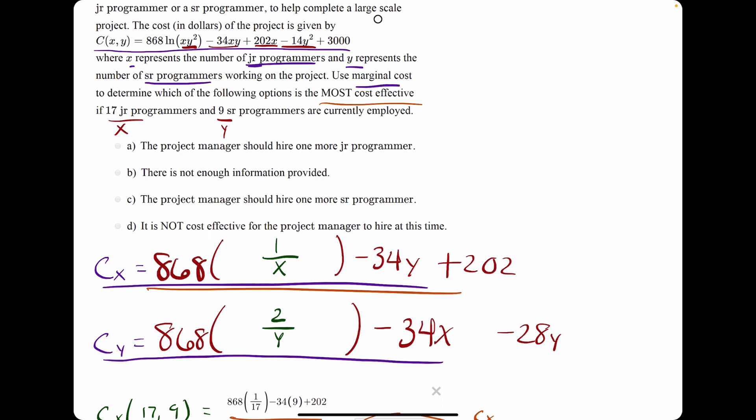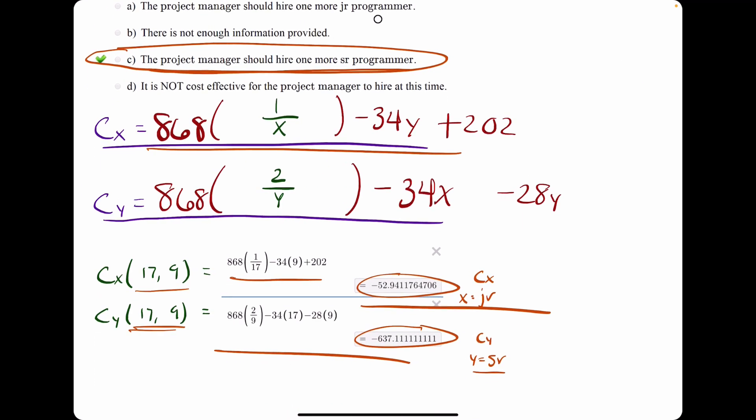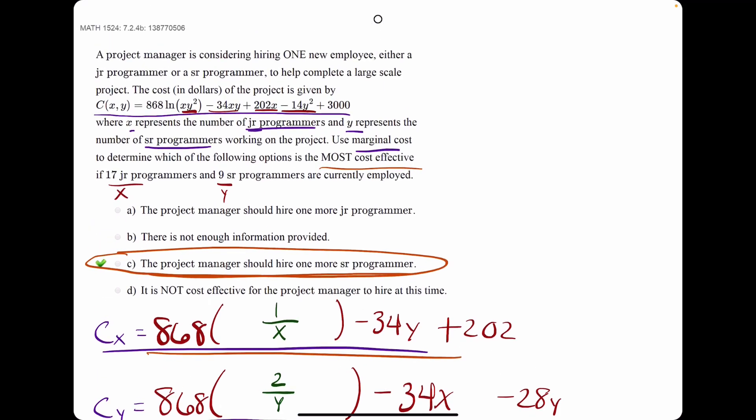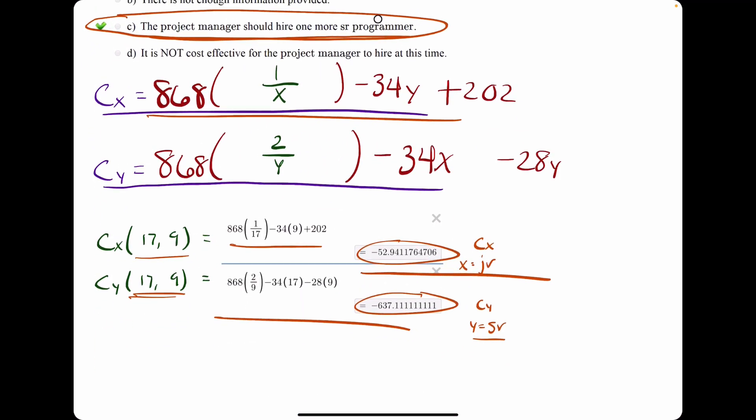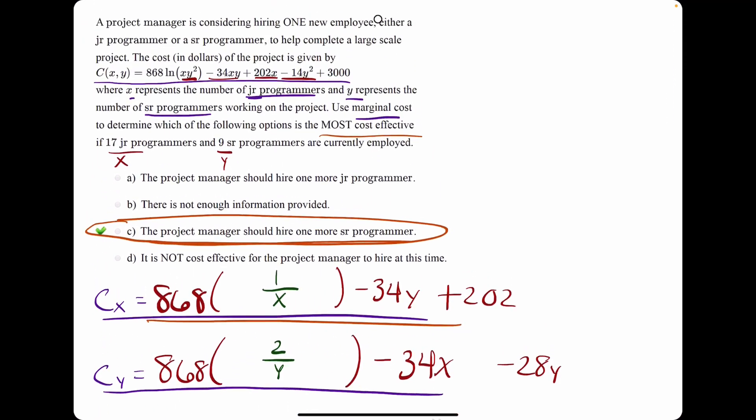It's more cost effective to hire a senior because it's the more negative value. That's why I mentioned that earlier. It looks like the project manager should hire one more senior programmer is our best answer, and it looks like that is our answer here. If you have any questions, let me know. If you need more of a breakdown, please visit the other example I've worked out.